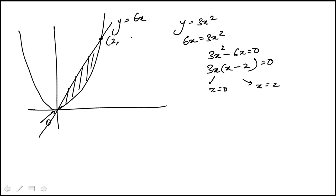So that's the point 2, 12. So here, if I draw this perpendicular here, the area under the straight line would be this triangle.